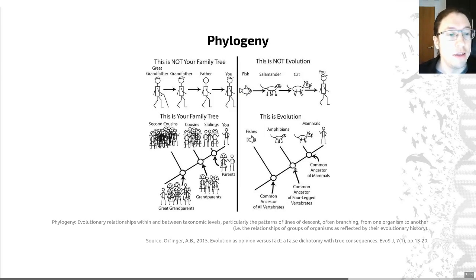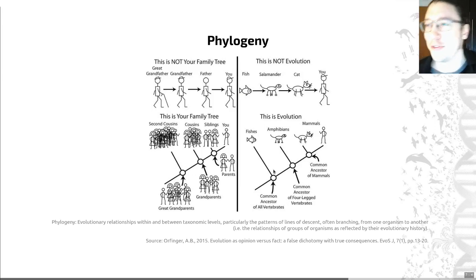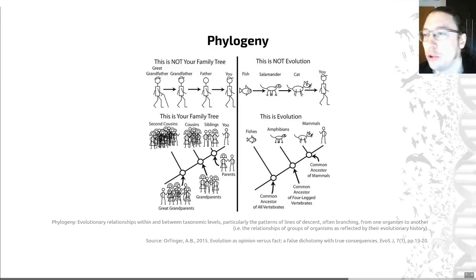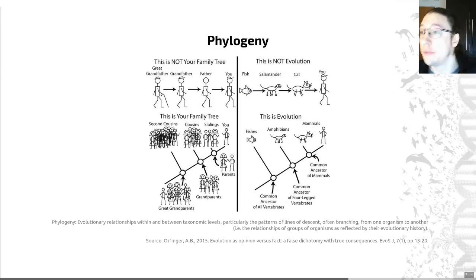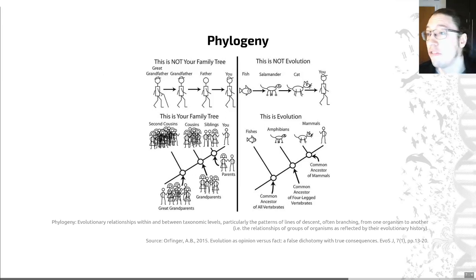An evolutionary tree like this is sometimes called a phylogeny. The field of building these trees is sometimes called phylogenetics. Another word you'll see for something that looks like this is a cladogram.